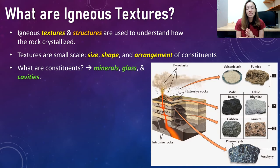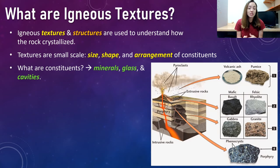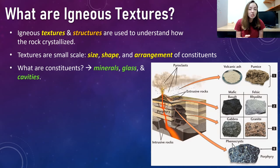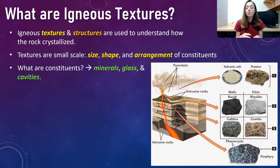Igneous textures and structures are used to understand how rocks crystallized, so their crystallization history is kind of told by their textures and structures. The textures are small-scale features on igneous rocks, such as the size, shape, and arrangement of their constituents — so grain size, the grain shapes, arrangement of the grains — and we'll talk about all of this in this video.